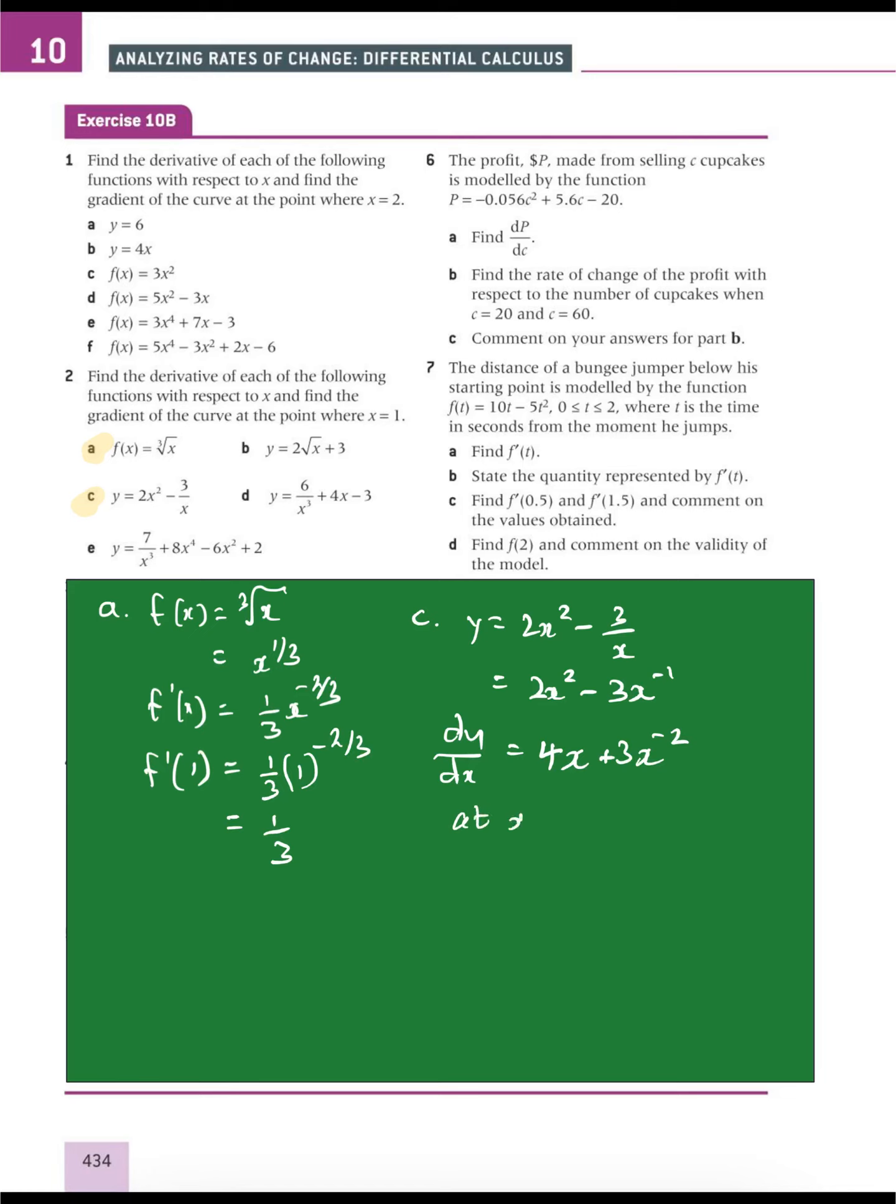At x equals 1, the gradient equals 4 times 1 plus 3 times 1 to the minus 2, and that equals 7. Now, our textbook has a different answer in the back, but the online version shows that 7 is the correct answer for c.